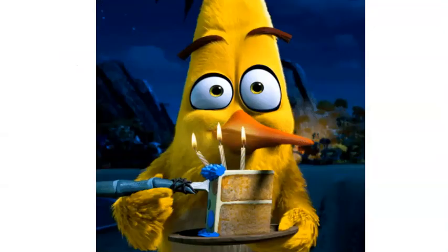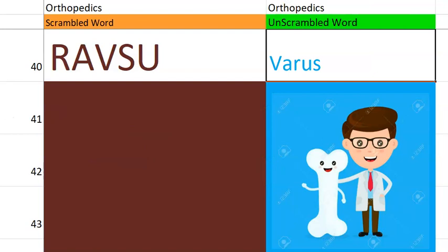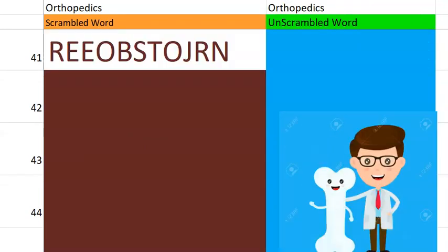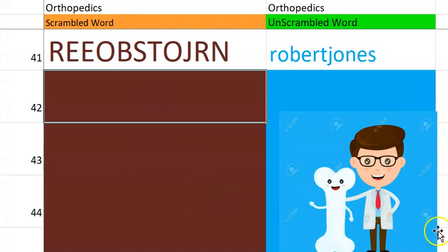We are done with 40 — just a few more to go. Let's go to the 41st one. Basically R, two words. It is Robert Jones. What is Robert Jones in orthopedics? It's a bandage — basically compression dressing. Robert Jones bandage, compression bandage.